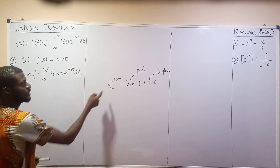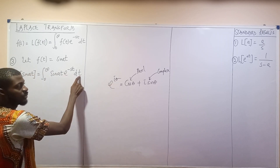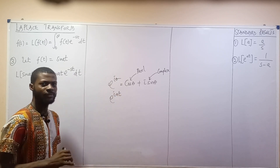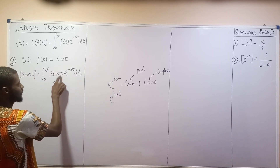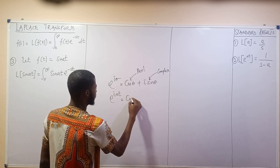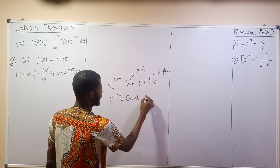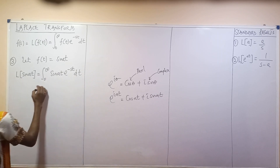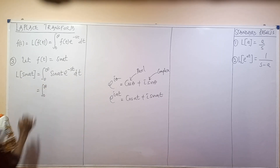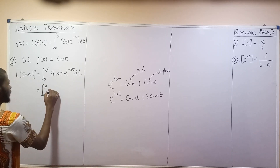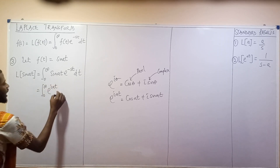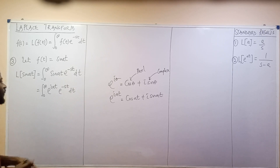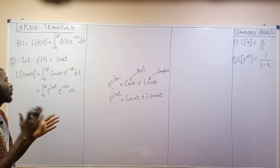I'm not dealing with theta here, I'm dealing with t. So this will become exponential i a t, which equals cos at plus i sin at. So it is better we use this substitution. I'm going to replace sine at in the integral with exponential i a t, then multiply by exponential minus st dt.